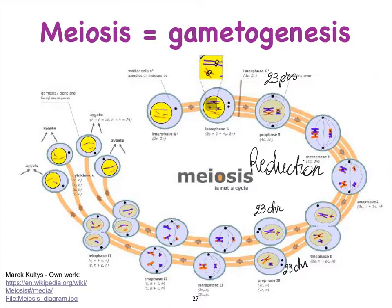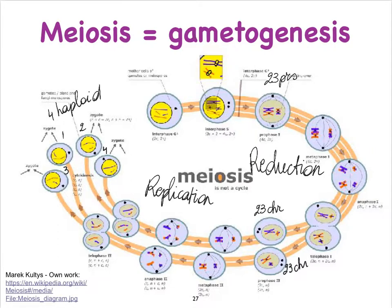Then when we go into the second half of meiosis, we refer to that as the replication phase, because now we're literally just going to make more of what we already have. So we'll end up with four cells that are each haploid. We started out with one diploid cell; after the reduction phase we end up with two haploid cells, and at the end of the replication phase we end up with four haploid cells.